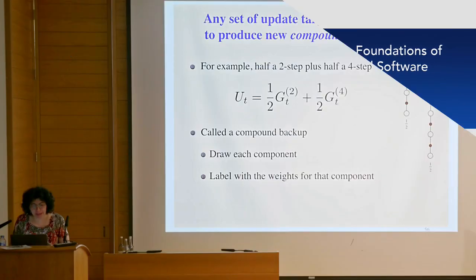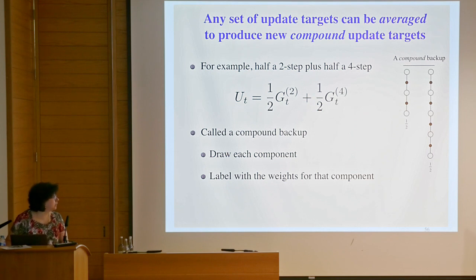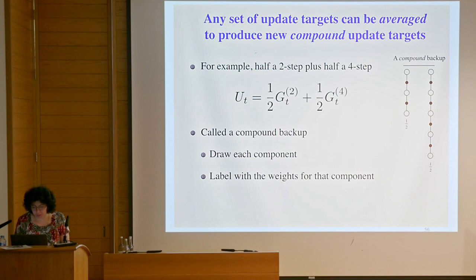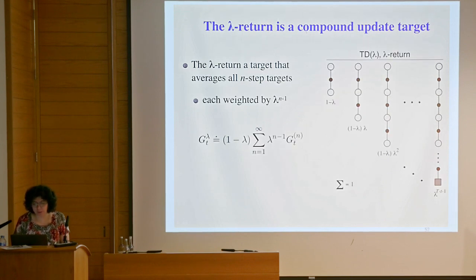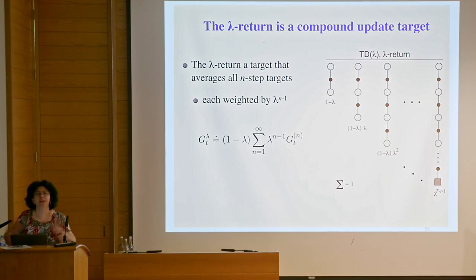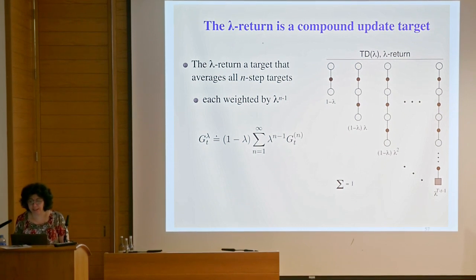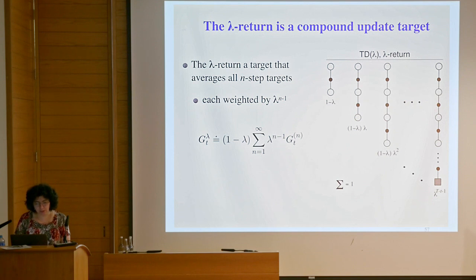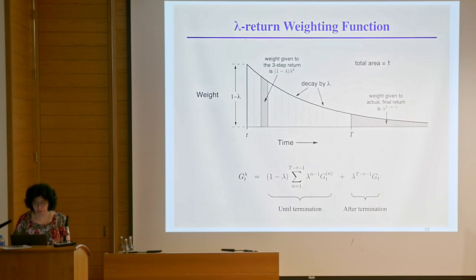Before the break, we talked about n-step backups. Eligibility traces let you do compound backups, where you average these with some weights. One particular scheme for doing this kind of weighting is exponential weighting, where you have a parameter lambda and you think of all the possible n-steps and weigh them in this particular fashion. All of these versions rely on this kind of exponential discounting with a parameter lambda.